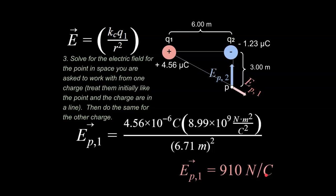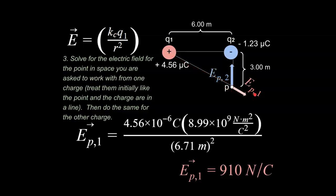When in doubt, look at your units. Strategy three says: solve for the electric field for the point in space you're asked about from one charge. Treat them initially as if the point and charge are in a line, then do the same for the other charge. In other words, we're just treating these as two points in a line in space — that's how we handle this first part.